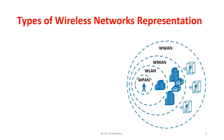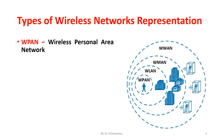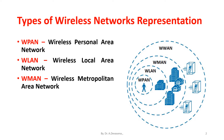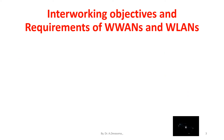In this diagram we have WPAN — that is wireless personal area network — then we have WLAN that is wireless local area network, then we have WMAN that is wireless metropolitan area network, then we have WWAN that is wireless wide area network. We are going to discuss about interworking objectives and the requirements of wireless wide area network and wireless local area network.